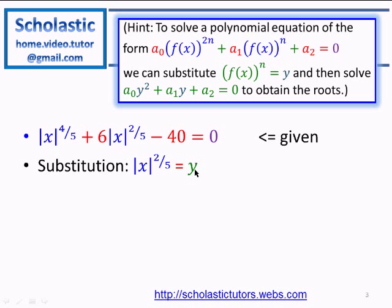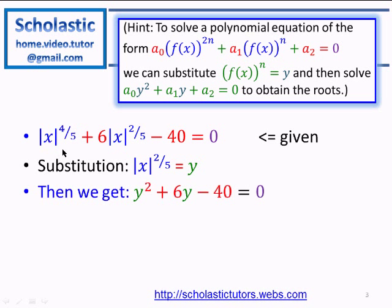If we substitute modulus x to the power 2 over 5 with y, we get y squared plus 6y minus 40, equal to 0. This is a quadratic equation.